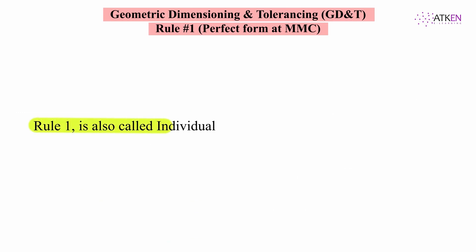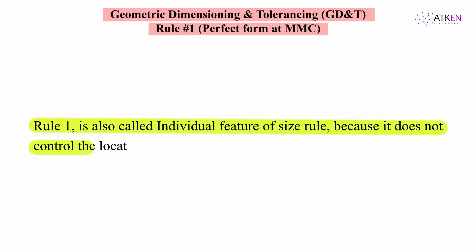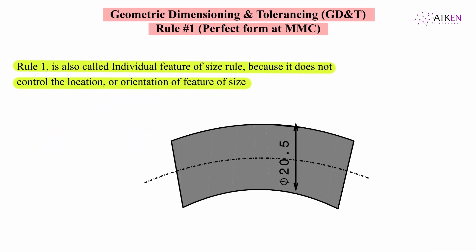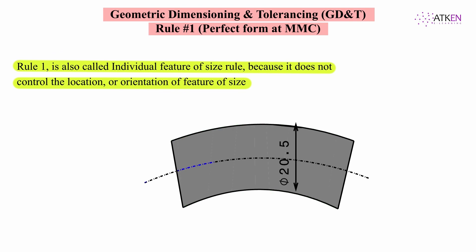Rule 1 is also called the Individual Feature of Size rule because it does not control the location or orientation of the feature of size. In this example, Rule 1 is applied only to the diameter, and the length of the part is independent of it. It only controls the individual feature and does not control perpendicularity or the length of the axis.